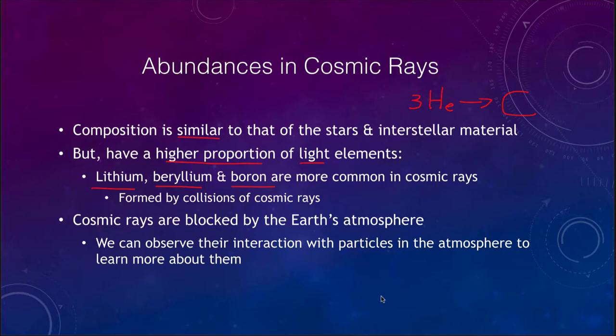So where do lithium, beryllium, and boron come from? We believe that they are formed by cosmic rays and collisions within cosmic rays. Much of the lithium, beryllium, and boron that we see is formed not in stars as other elements are, but is actually formed in cosmic rays — these high energy particles streaming through the universe and occasionally colliding with each other. Those helium nuclei and protons could then form these slightly heavier elements.